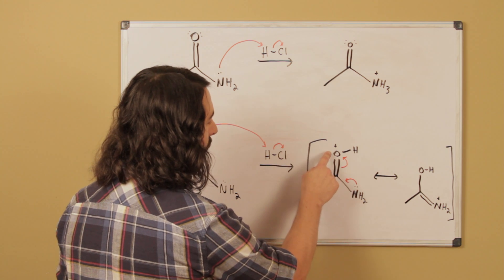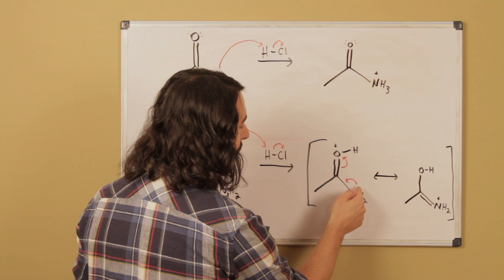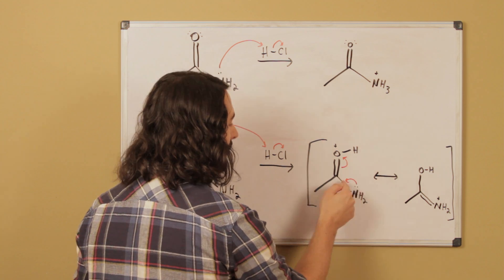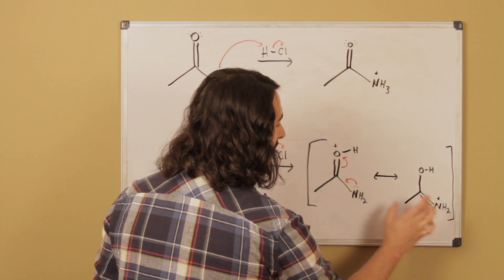Because we can see that we have a formal positive charge on the oxygen, which is unfavorable. However, the lone pair from the nitrogen atom can go right here, kick this pi bond up there, and then this is the other resonance structure.